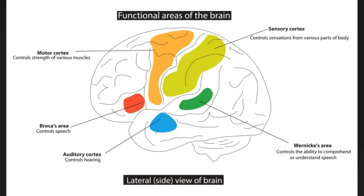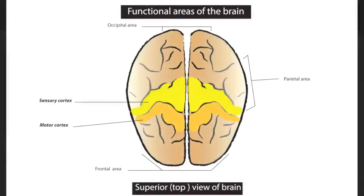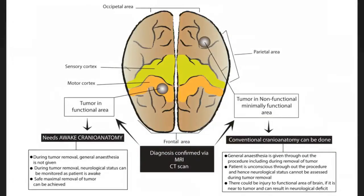Similarly, the area marked in orange is the motor cortex, and it controls the motor strength of muscles. The area marked in yellow is the sensory cortex. The green area is called Wernicke's area, and it controls one's ability to comprehend or understand. These are the functional areas seen from the top.